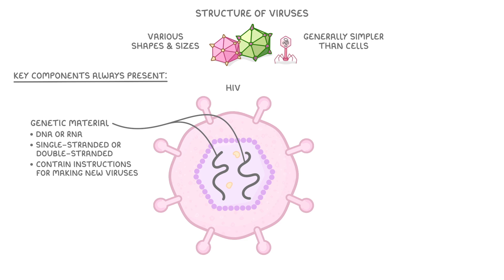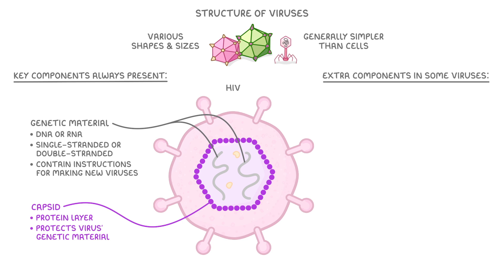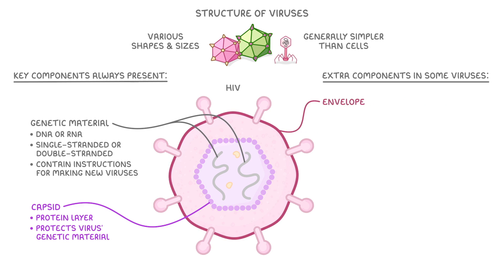Next we have the capsid. This is a protein layer that protects the virus's genetic material. There are certain extra components in some viruses too — as an example, they might have an envelope, which is an outer layer of phospholipids that helps the virus enter host cells.